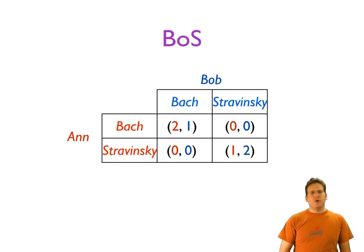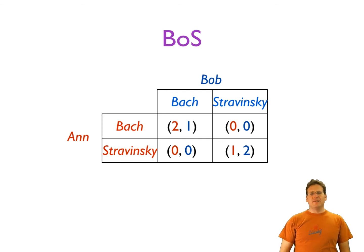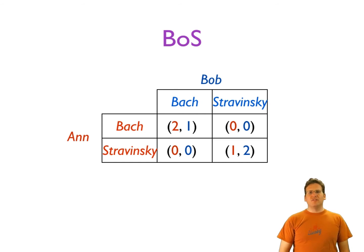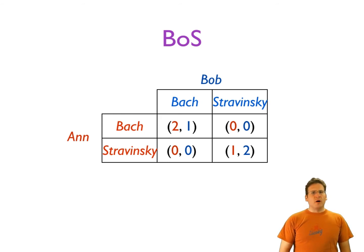Look at Anne: her payoff if they both go to Bach is two, but if they both go to Stravinsky it's only one. For Bob it's the other way around. In plain English: if they go to different concerts they really don't like that, so they'd prefer to go to the same concert — but Anne would prefer they both went to Bach and Bob would prefer they both went to Stravinsky.